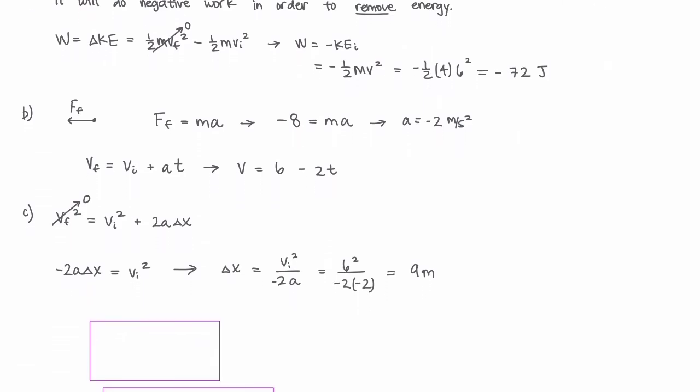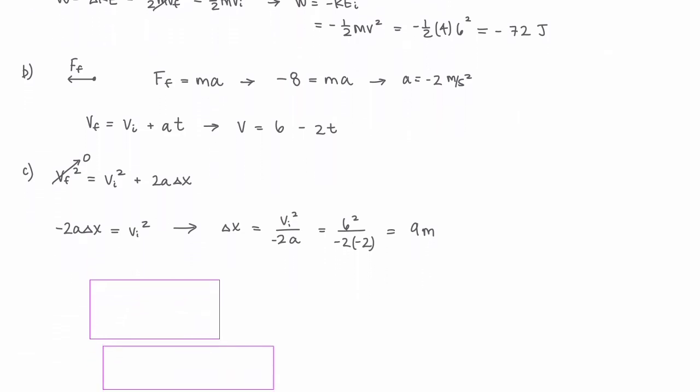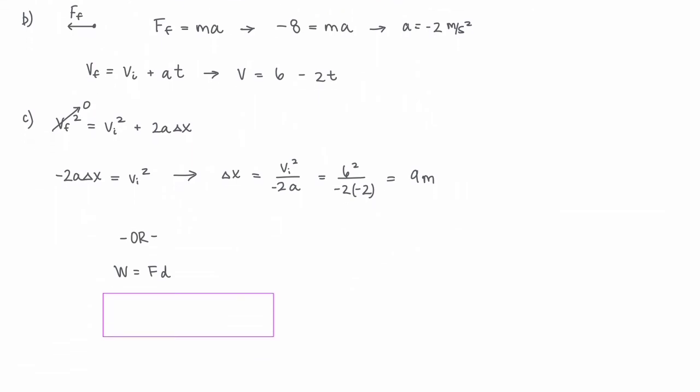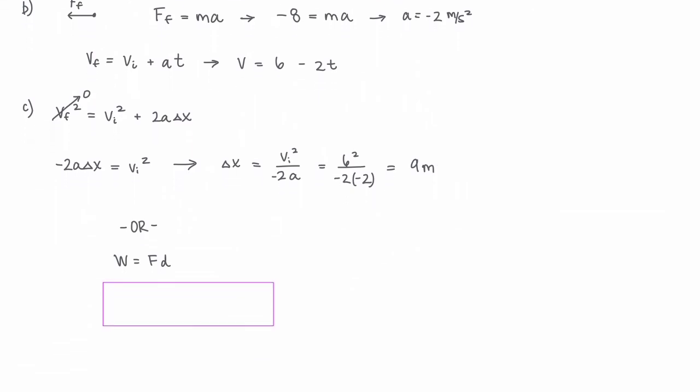Another way to solve for displacement is to use the work equation: work equals force times distance. We don't need sine theta because the object moves in one dimension. Plugging in these values and solving for distance, we also get 9 meters.